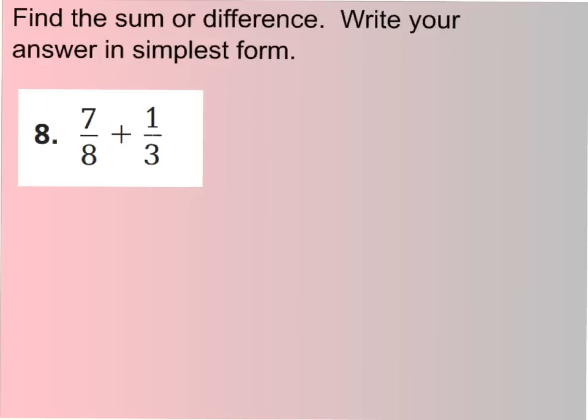I'd like you to try number 8 on your own before we check it together. Go ahead and pause the video now. For this one you should have said 7 eighths plus 1 third. You're going to have a common denominator of 24. So 7 eighths is equal to how many twenty-fourths? You should have said 21 twenty-fourths. Because 8 times 3 is 24, so 7 times 3 is 21. And 1 third equals how many twenty-fourths? You should have said 8 twenty-fourths. Because 3 times 8 is 24, and 1 times 8 is 8. Now you're all set up to add.